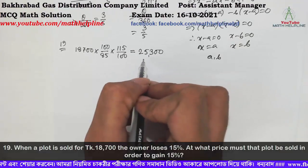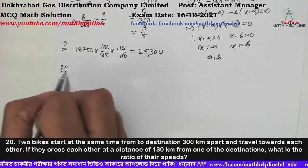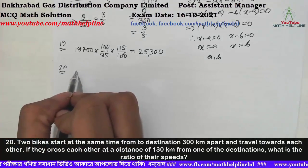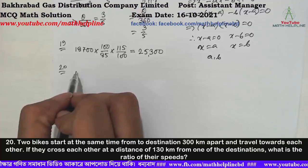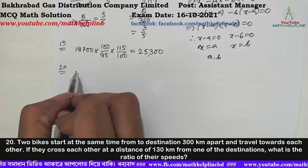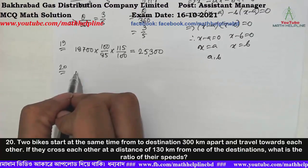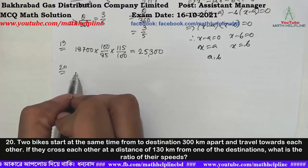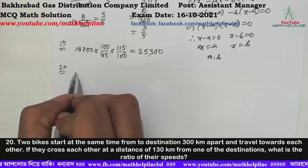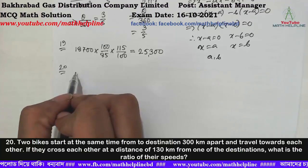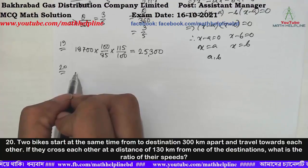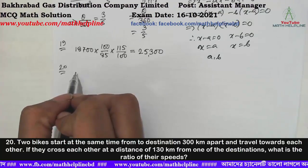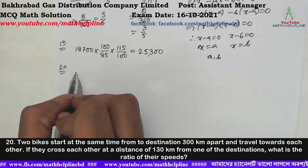Two bikes start at the same time from two destinations 300 km apart and travel towards each other. If they cross each other at a distance of 130 km from one of the destinations, what is the ratio of their speeds?